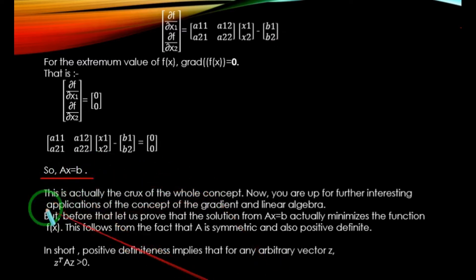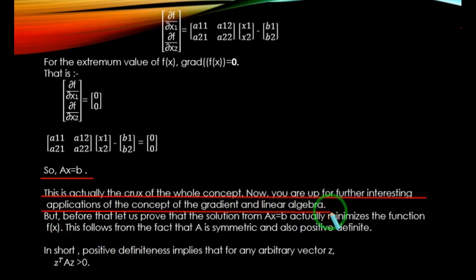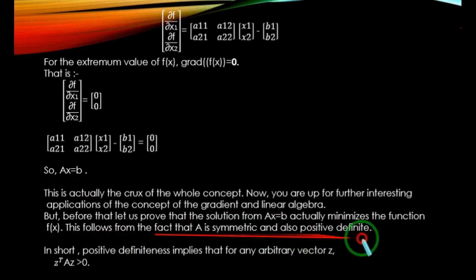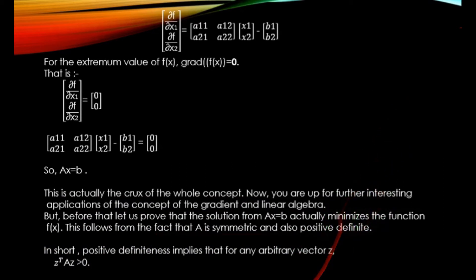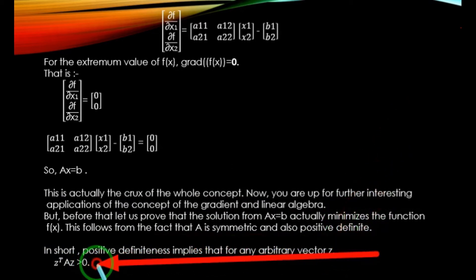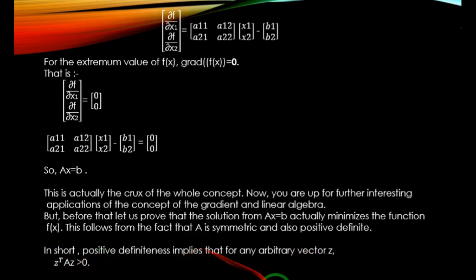Now you are set for further interesting applications of the concept of gradient and linear algebra. But before that, let us prove that the solution from Ax = b actually minimizes the function f(x). This follows from the fact that A is a symmetric and positive definite matrix. In short, the positive definiteness implies that for any arbitrary vector z, z^T·A·z should always be greater than 0. If this value is positive, then the matrix A is a positive definite matrix.